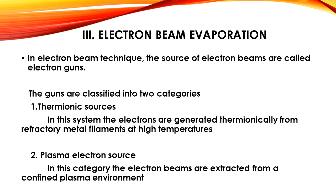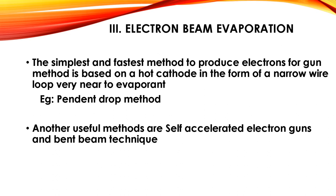The first category is the thermionic source, in which electrons are generated thermionically from refractory metal filaments at high temperatures. The second is the plasma electron source, in which electron beams are extracted from a confined plasma environment. The simplest and fastest method to produce electrons for the gun method is based on a hot cathode in the form of a narrow wire loop placed very near to the evaporant. An example of such a method is the pen and drop method.